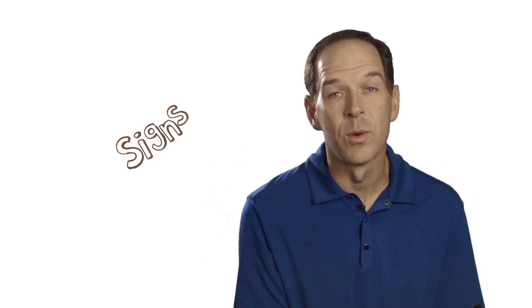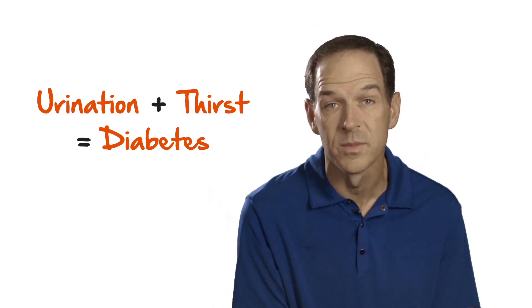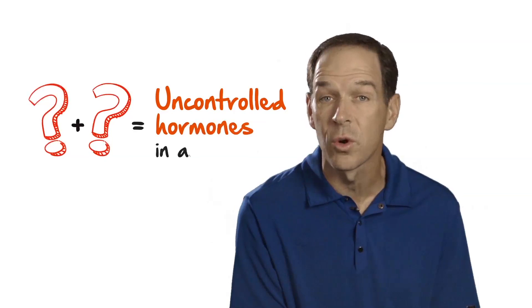At first, I had no idea what to look out for when monitoring for signs of recurrence. I knew that frequent urination and thirst are symptoms of diabetes, but I didn't know how to identify the symptoms of uncontrolled hormones in acromegaly.